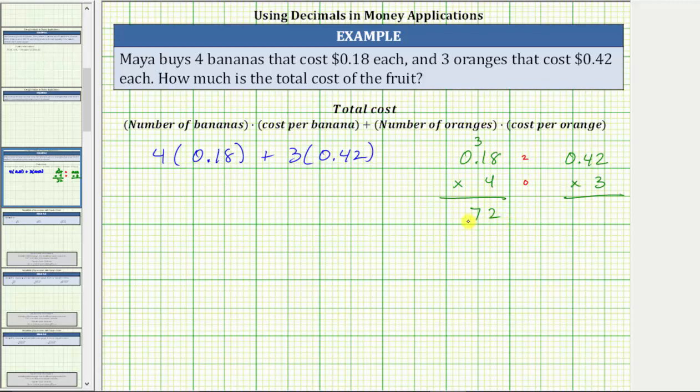One, two, giving us 0.72. This tells us that bananas cost 72 cents.